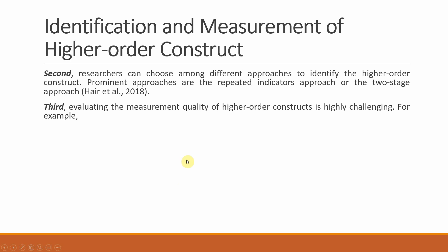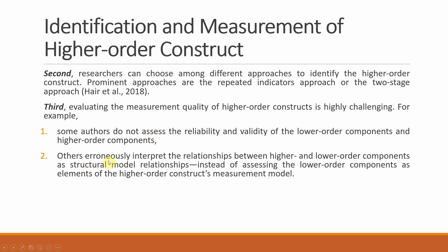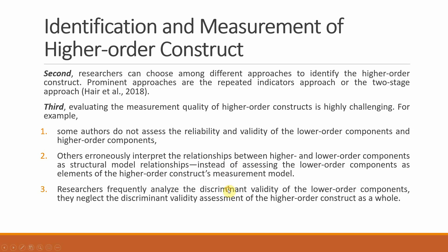Some authors do not assess the reliability and validity of both lower order and higher order components — this is a concern. Others erroneously interpret the relationship between higher and lower order components as a structural model relationship, instead of assessing them as elements of the higher order construct's measurement model. Additionally, researchers frequently analyze discriminant validity of lower order constructs but neglect the discriminant validity assessment of higher order constructs as a whole — another common mistake made particularly in reflective-reflective models.